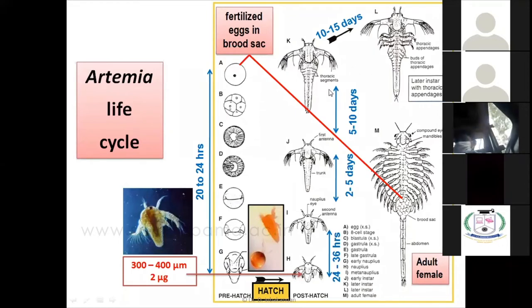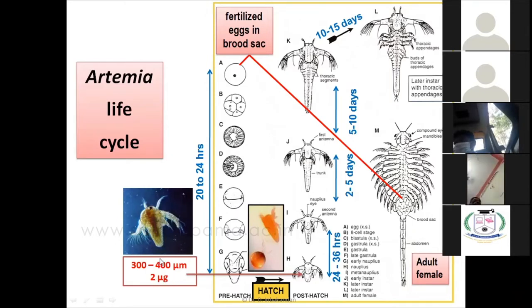The nauplii then develop into instars and into adults. All stages are preferable for feeding aquatic organisms like shrimps as well as fishes. Most shrimp and fish hatcheries depend on artemia. They take the artemia cysts, hatch them, and get the nauplii. These nauplii are around 300–400 micrometers in size and only about 2 micrograms in weight, but are very nutritionally rich, and are given to hatchery-reared shrimp larvae or finfish larvae.